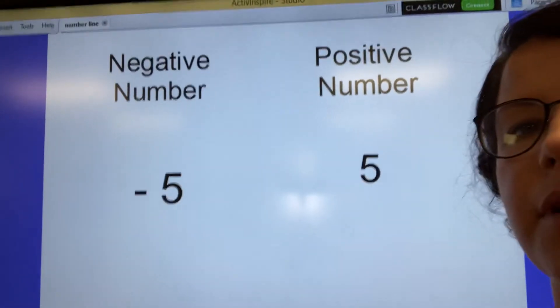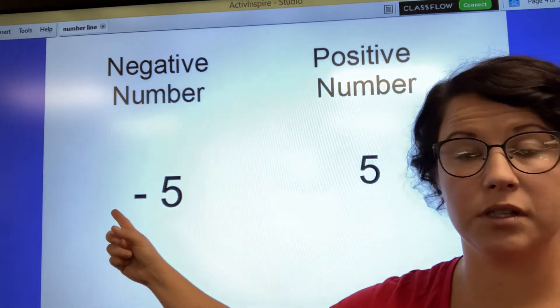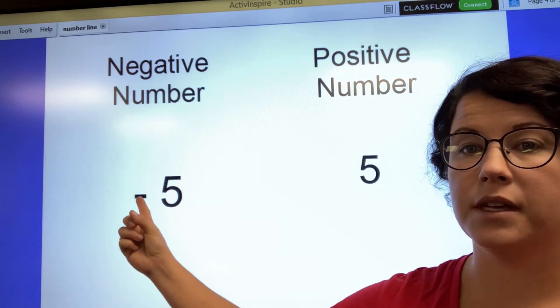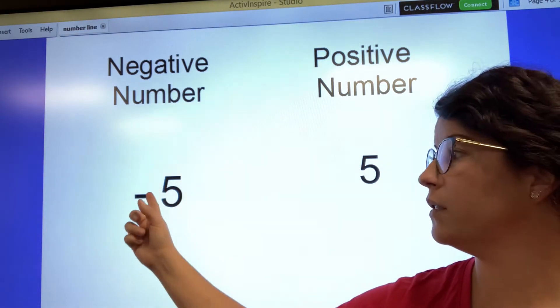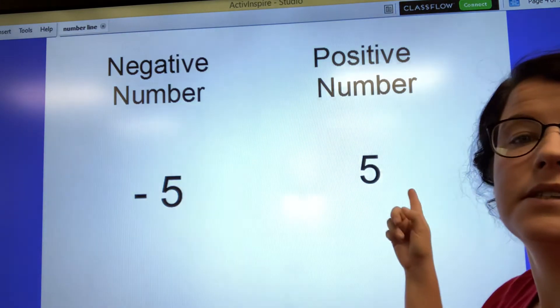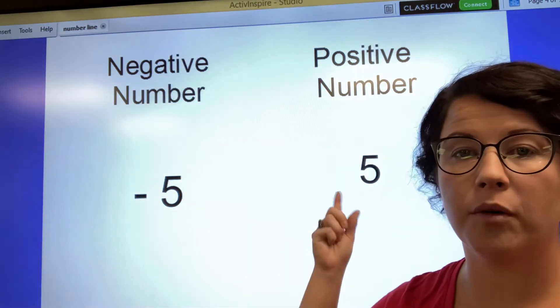So we have a negative and a positive number here. So this little sign right here is all you need to have for it to be a negative number. This minus sign here means negative. That's what makes it negative. So this is negative 5, and this is a positive 5. That's how you would say it. You'd say negative 5 or positive 5.